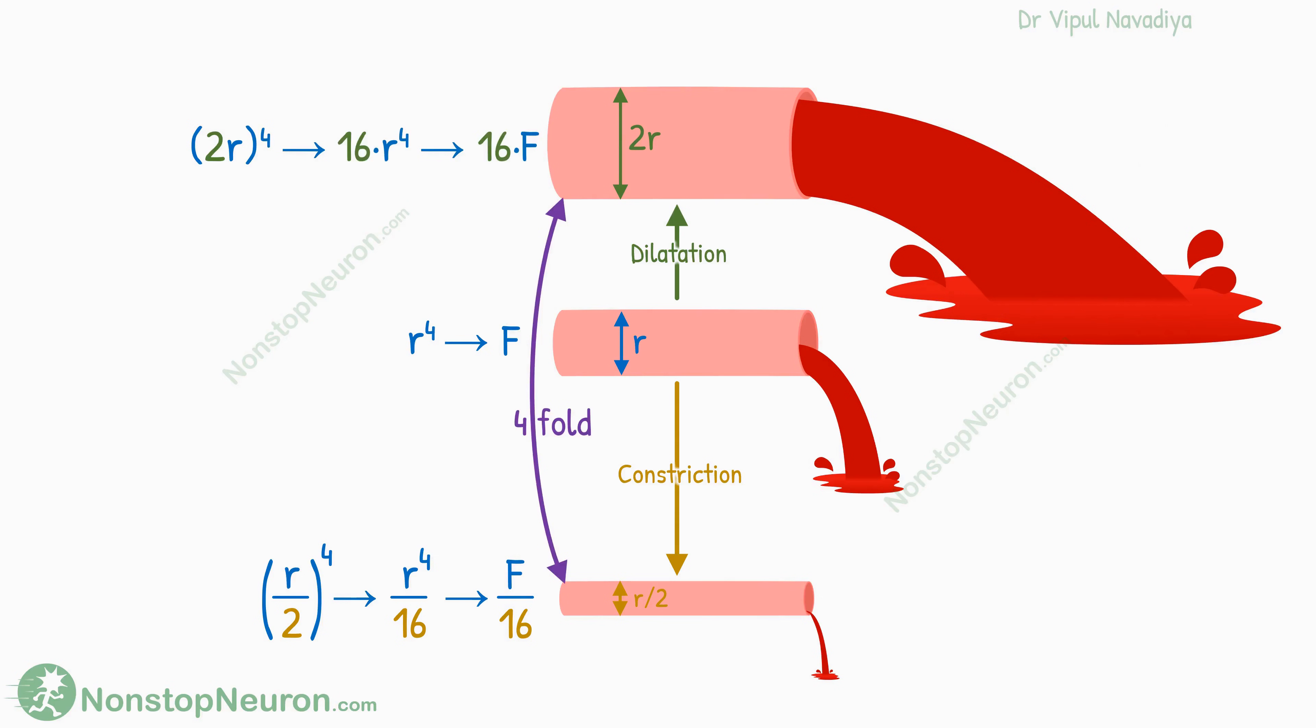Thus, only a four-fold change in radius produces 256-fold change in blood flow. Isn't that huge? But why the radius has this huge impact? Again, there are two reasons. One is pure math.